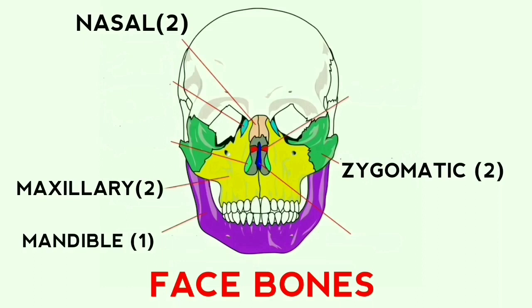The next bone is the lacrimal bone, which forms the side wall of the nasal cavity. These are shown in the figure with purple color.